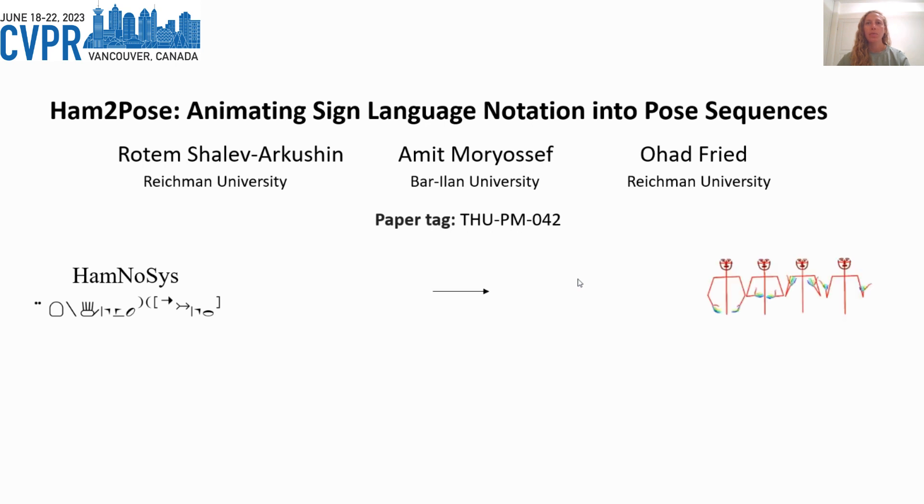It is composed of two parts: the text processor, which is responsible for the HamNoSys encoding and the prediction of the sequence length to be generated, and a pose generator, which gets the encoded HamNoSys and one reference pose frame as inputs and converts them into a sequence of poses performing the relevant sign.